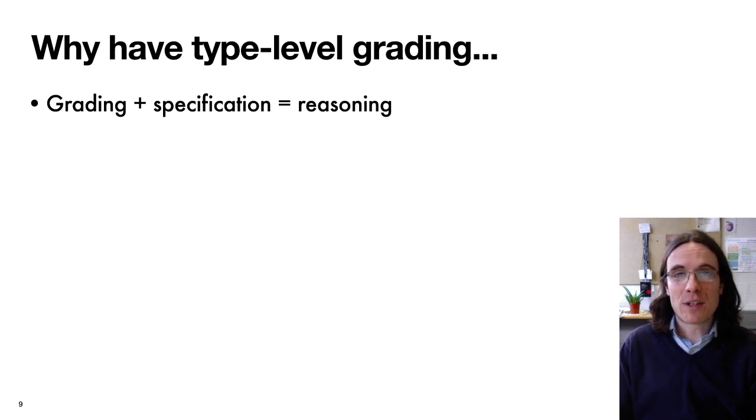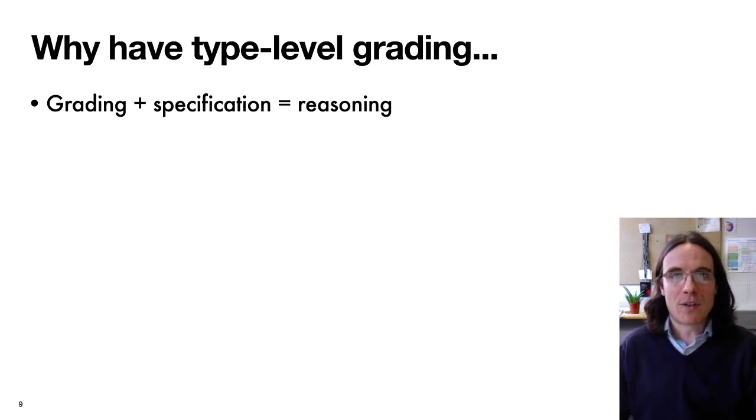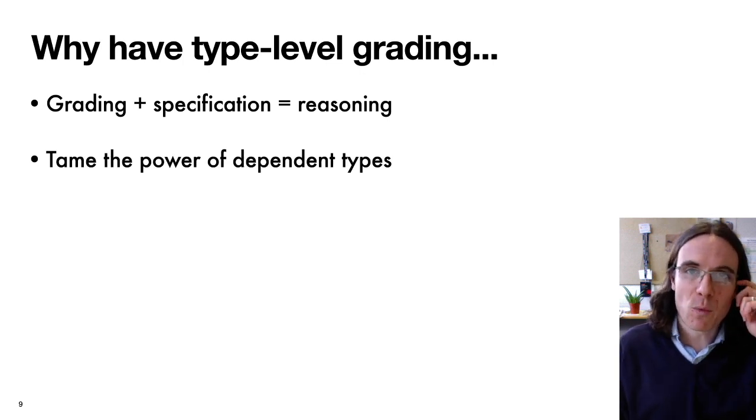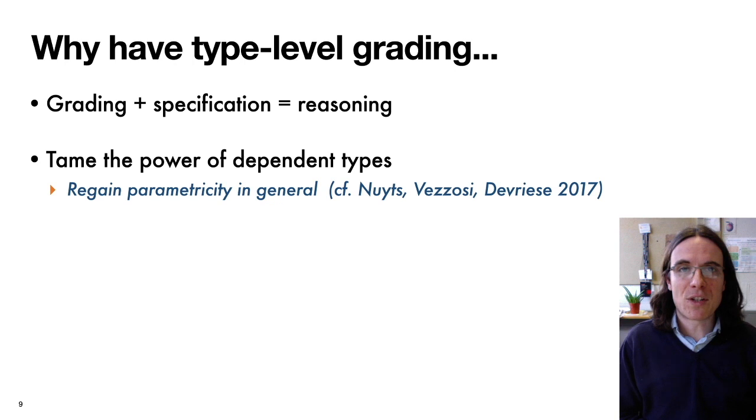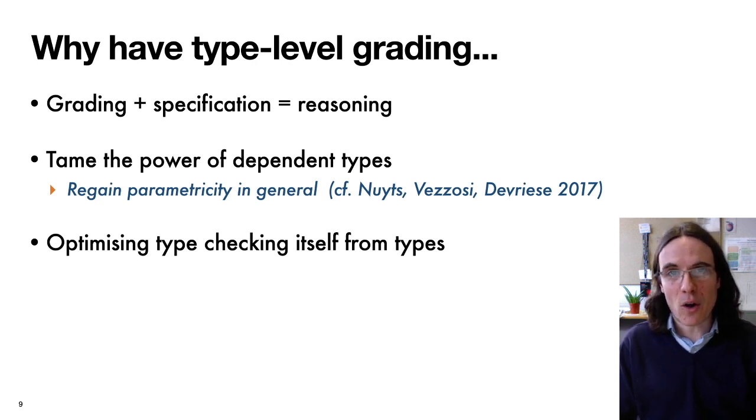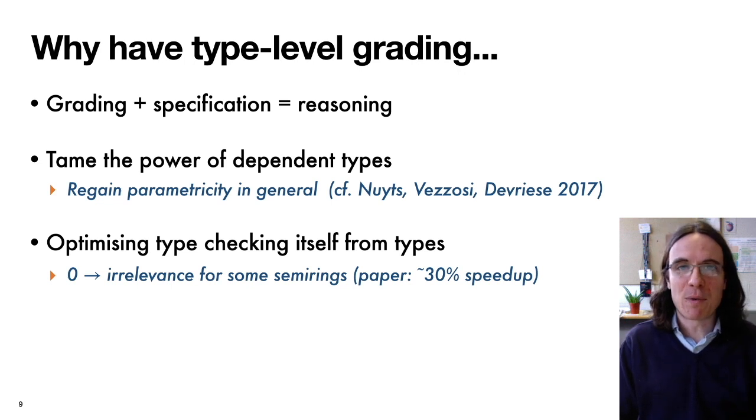The systems that have used grading in the past at the computation level, so in combination with specifications, this gives us another way of reasoning about the behavior of programs. So we're getting that same power for our type level computations as well. It also provides us a way to tame the power of dependent types. So in a dependently type setting, we lose parametricity results when we go to higher types. This is a well-known problem with dependent types, which others have seeked to solve. For example, Neuss et al had a modal system which could bring back parametricity into a dependent type theory. And this is something that falls out of our work for free as just one particular application of grading. Another use is that we can use the grades to actually optimize the type checking procedure itself using the kind of optimizations that we can use linear types and other kinds of grading for, but actually in the type level computations. And our paper shows some experiments with this idea and shows that we can speed up type checking by 30%, even with just some simple optimizations based on grades.